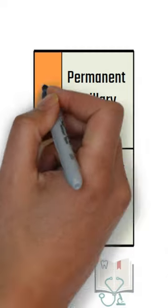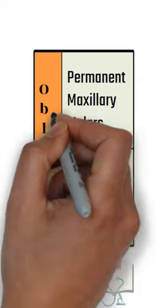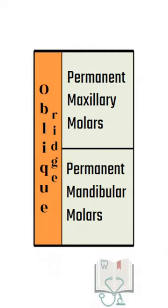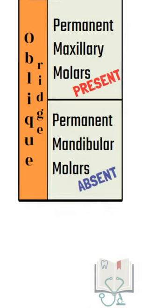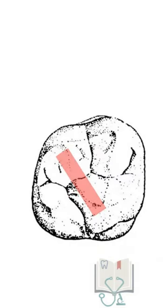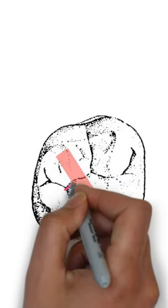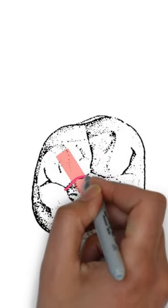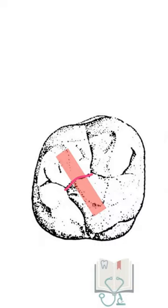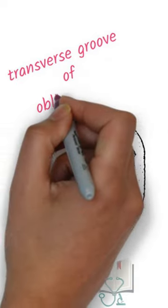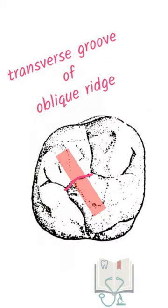Oblique ridge identification helps to easily distinguish maxillary molars from mandibular molars. Occasionally, we may find a developmental groove running across it, called the transverse groove of the oblique ridge.